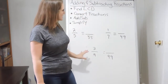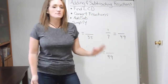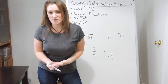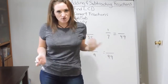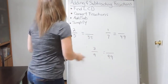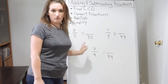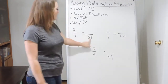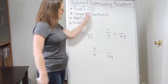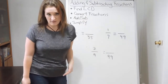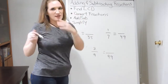Before getting to examples where we're actually adding and subtracting fractions, I want to very briefly go over a couple of examples on how to convert fractions. So once we find our common denominator, what do we do? How do we change our fractions to have that common denominator? Let's take a look at this example: two-fifths. Let's say we have the fraction 2 over 5, but our common denominator is 35.